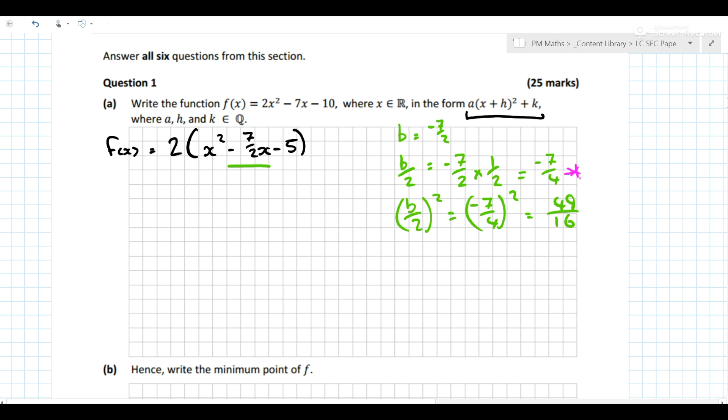But right now what happens is -7/2x, we add that 49/16 and we also subtract the 49/16. The first one is always to add, the second one is always to subtract. Now the reason I can do that is because doing both of them has a net effect of doing nothing at all.